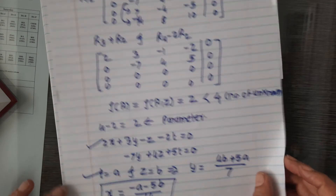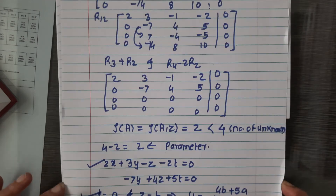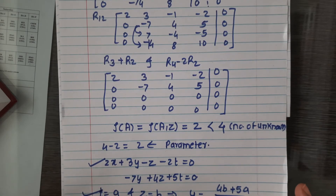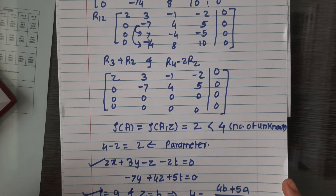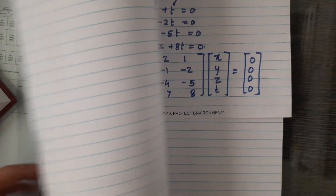Like this, we solve the homogeneous system. The procedure remains the same as for the non-homogeneous system — there is no change. You reduce to echelon form and then find the solution.